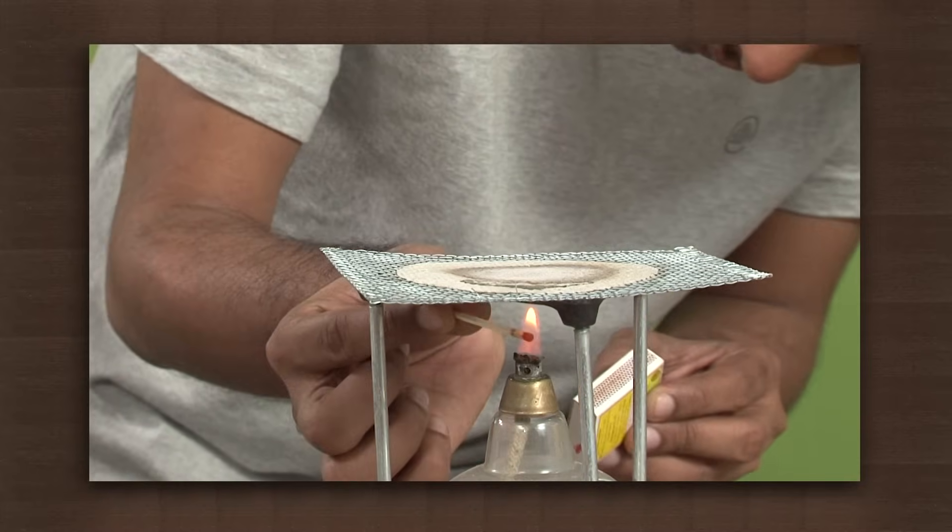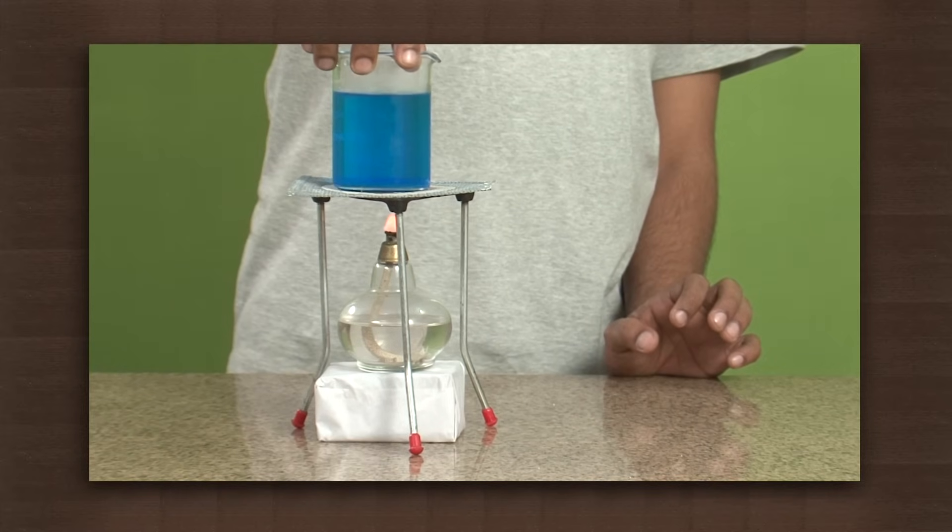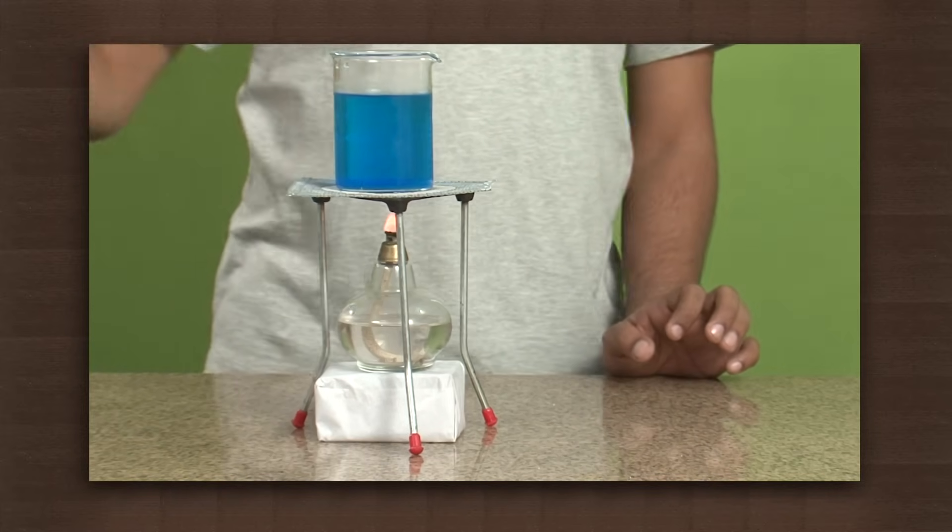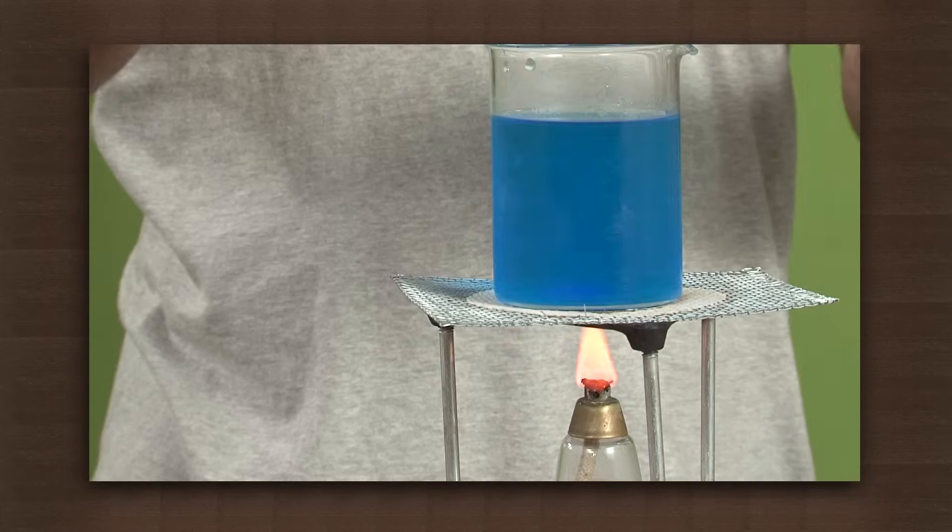Light the spirit lamp, place the copper sulphate solution on the burner, heat the mixture. Now, keep on adding copper sulphate till no more salt is dissolved.